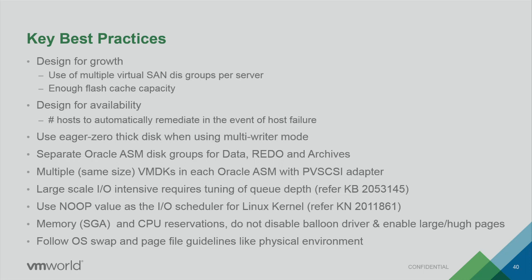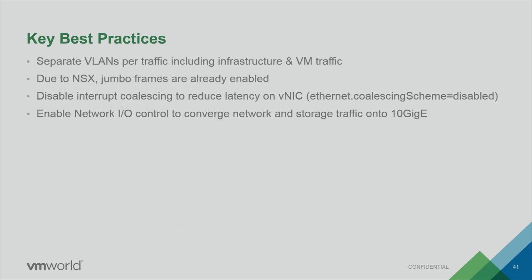Best practices: keep your VLANs and traffic separated. You don't want your vMotion VLANs sitting on your vSAN — it's newer thinking we have to adopt as we deploy vSAN. Due to NSX, Jumbo Frames are already enabled. If you run NSX going from VTEP to VTEP, because of that extra encapsulation around the packet, you need to be at least 1600 MTU. Why not just go to Jumbo Frames and be done with it? Disable interrupt coalescing to reduce latency on vNICs, and enable Network IO Control to converge network and storage traffic to 10GbE.